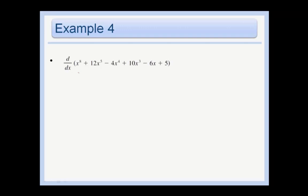Meaning that we can just take the derivative of each of these parts. So I'm just going to write it all out for the first time, but you never need to write this all out. Which is going to be equal to 8x to the 7th plus 12 times 5 is 60x to the 4th minus 4 times 4 is 16x cubed plus 10 times 3 is 30x squared minus 6 times 1. And then the derivative of 5, the derivative of a constant is just 0. And so that is our answer.